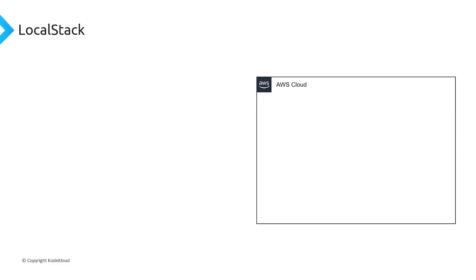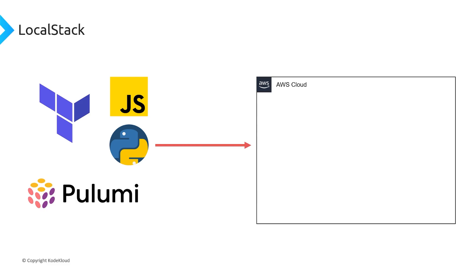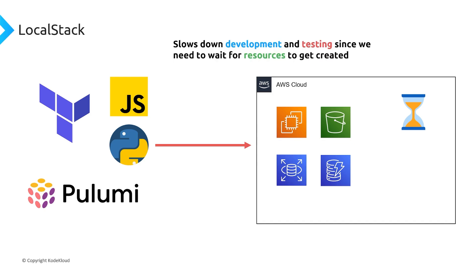Before we get started, I want to talk about why LocalStack was ultimately created and what issues it's there to help address. When you're working with AWS, you're going to be working with the AWS API — whether you're writing infrastructure as code with Terraform or Pulumi, or developing an application that interacts with the AWS API. Anytime you're working on these things, it's going to need to hit the AWS API. If you need to create an EC2 instance, your application sends that request to AWS, AWS has to wait and then actually create those resources. This slows down development and testing because anytime we want to test or debug our code, we have to talk to AWS and wait for it to create or modify a resource.